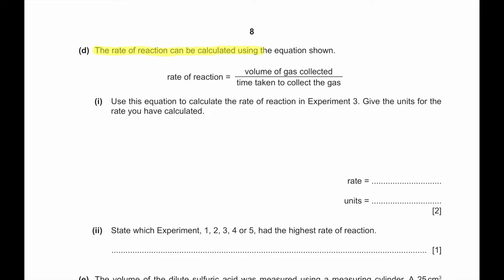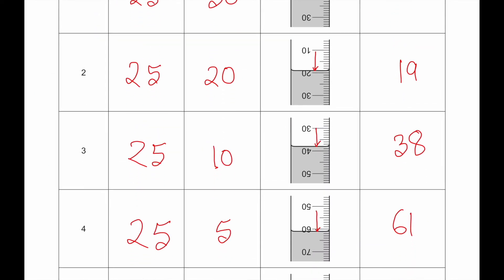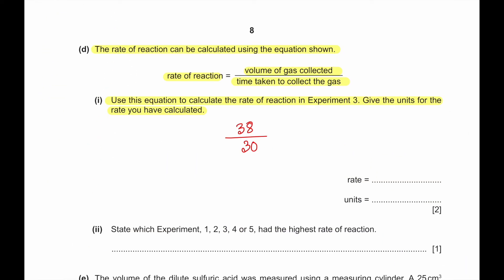Part D: The rate of reaction equals the volume of gas collected divided by the time taken. Using this equation for experiment 3: volume of gas = 38 cm³, time = 30 seconds. Rate = 38 ÷ 30 = 1.27 cm³ per second.